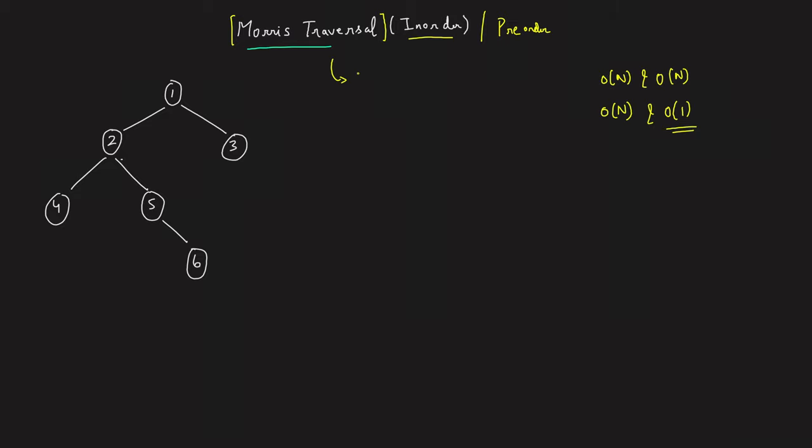Morris Traversal uses the concept of a threaded binary tree, which might sound scary, but I'll be teaching you in such a way that this will look like the easiest question in the entire binary tree playlist. I'm going to tell you the intuition and code it live so that the code remains in your head forever and you can code it by yourself.